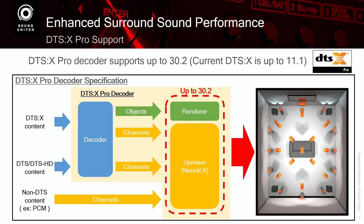Object-based means I can assign any number of channels available in my receiver to render that object in your room. The limitation for DTS:X in the home was 11.1, and this had nothing to do with the content — it had to do with the licensing and the processing of the older DTS:X renderers in AVRs. The new DTS:X Pro decoder can support up to 30.2 channels or 30.2 speakers in your room. If it's native DTS:X, the renderer will take those objects and render them using up to 30.2 speakers. If it is non-object-based, such as older DTS or DTS-HD content, the decoder will send it to their new Neural:X upmixer, which will upmix the signal to utilize up to 30.2 speakers.